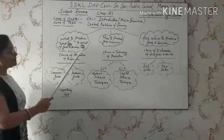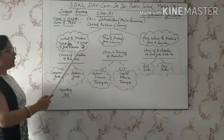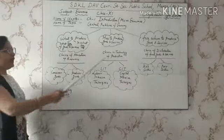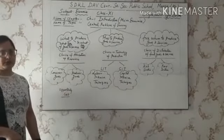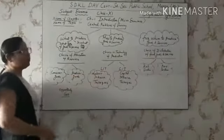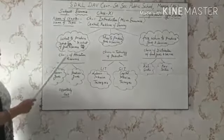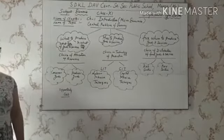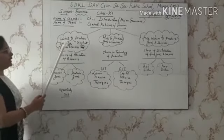The first central problem is what to produce and in what quantity. The second problem is how to produce these goods and services. The third problem is for whom to produce these goods and services. Let's discuss these three central problems one by one.